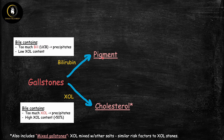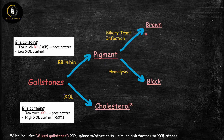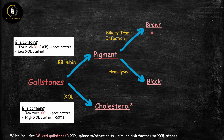There are actually two different types of pigment stones: brown pigment stones and black pigment stones. Both form because of too much unconjugated bilirubin, but the underlying mechanism that leads to excess bilirubin is different between them. Black pigment stones are primarily due to hemolysis, and brown pigment stones are primarily due to biliary tract infection. This difference in mechanism accounts for the difference in their pigment and stone composition.